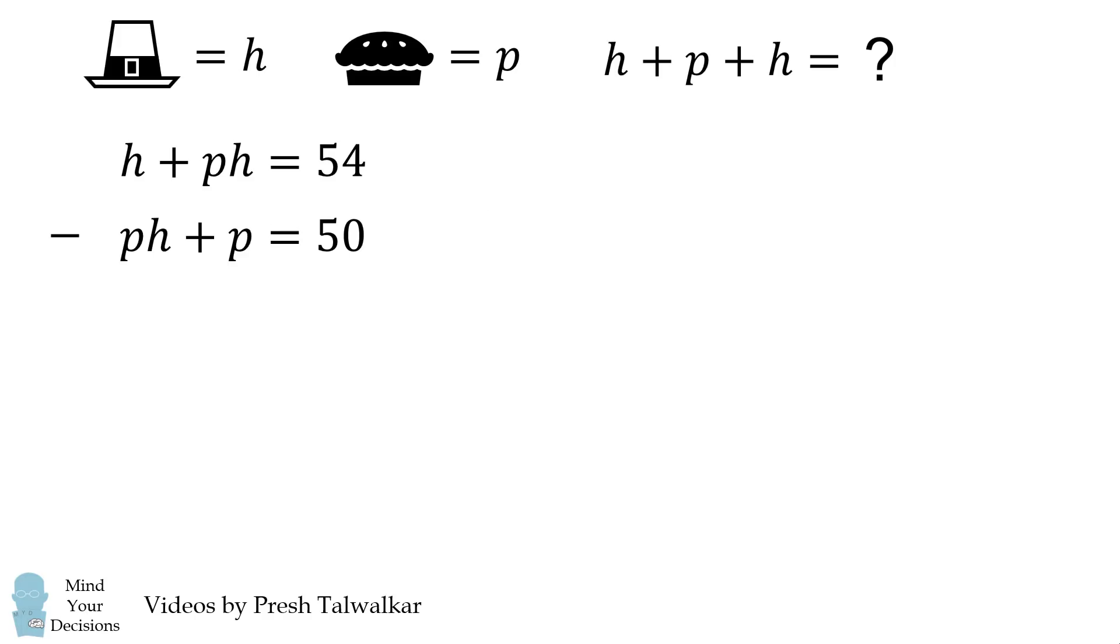Now we have a pH in both of these equations and if we subtract the second equation from the first, we'll cancel out the pH terms. So we now have H minus P is equal to 4. This means H is equal to P plus 4.